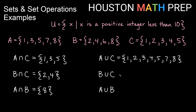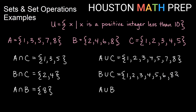Looking at the next one, B union C. I want to write down anything I see on either the B or C list. We write down 1, 2, 3, 4, 5 because we have all of those in C. Then we look back at B and see anything else we didn't write down. We didn't write down 6 and 8, so we'll need a 6 and an 8 here. Those are all the elements that appear in the B list or the C list or both.